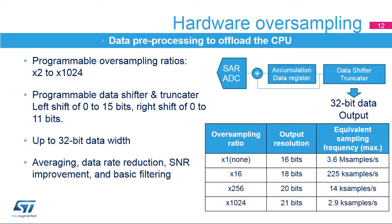The ADCs support hardware oversampling. They can oversample by 2 to 1,024 times without CPU support. The converted data is accumulated in a register, and the output can be processed by the data shifter and the truncator. 16-bit data can be extended to be presented as a 32-bit data register. This functionality can be used as an averaging function, for data rate reduction and signal-to-noise ratio improvement, as well as for basic filtering.